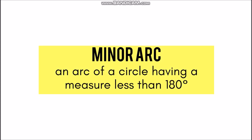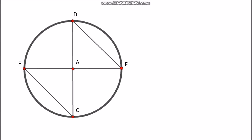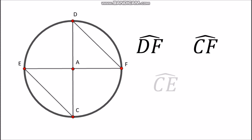And we have minor arc. A minor arc is an arc of a circle having a measure less than 180 degrees, so minor arcs must be smaller than semicircles. For example, we have arc DF, arc CF, arc CE, and arc ED. Notice that when naming minor arcs, we only use two letters.